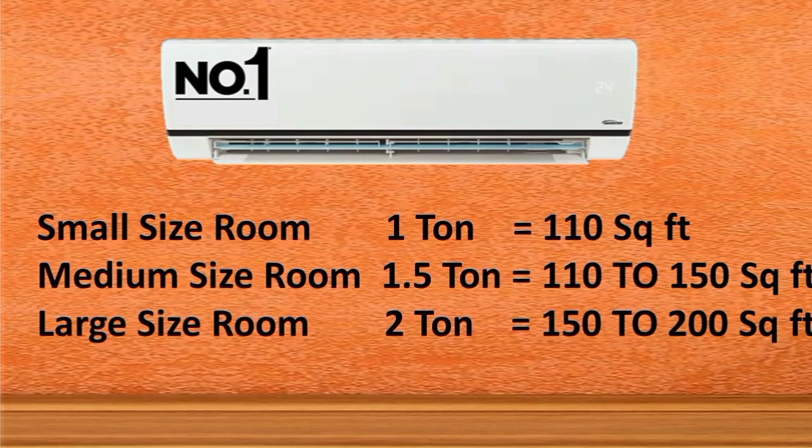How much AC capacity do you need for your room size? If you have a small room, it is less than 110 square feet. For a medium size room of 150 square feet, use a 1.5 ton AC. For 150 to 200 square feet, use a 2 ton AC.